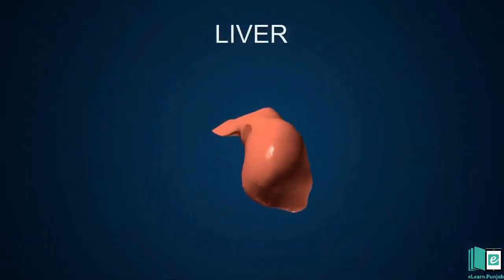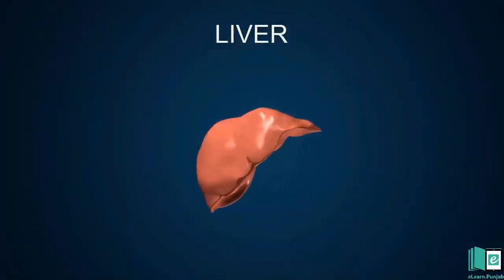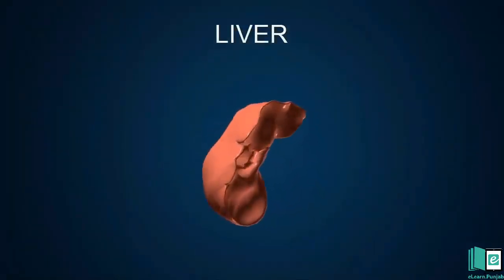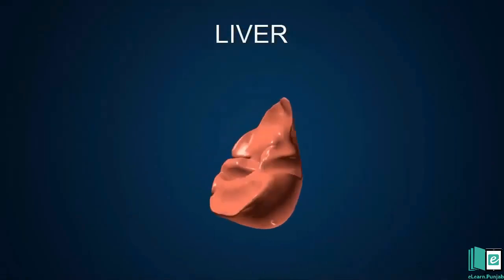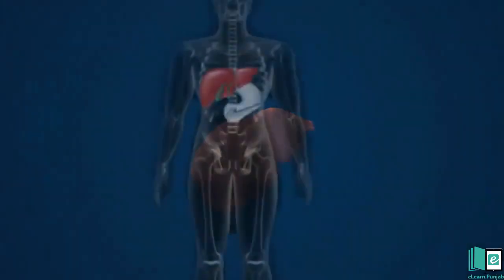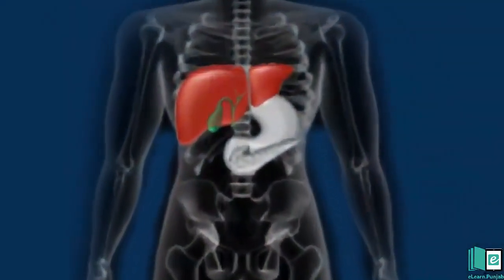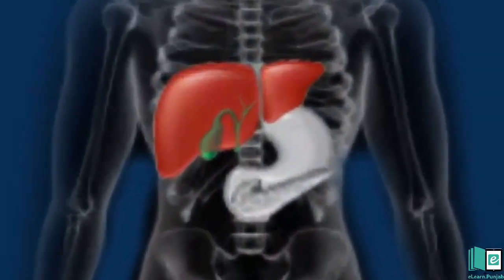Liver. The liver is the largest gland of the human body. It is situated above the stomach. Its color is reddish brown. The liver produces bile to digest fats. It also breaks down harmful substances in the blood.